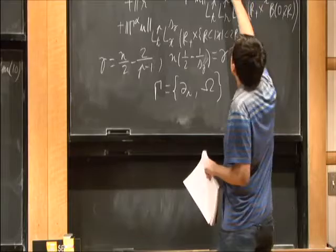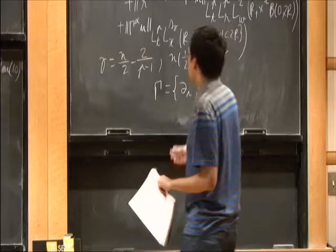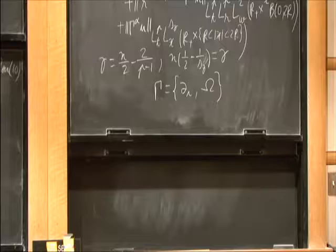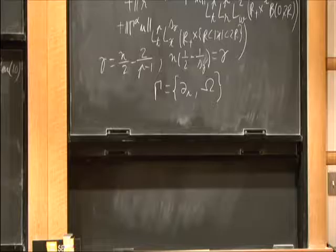Once you have these norms, you just have to work to show that they're preserved. You start with a linear equation, and the nonlinearity raises you up to power p. You need to take the correct norm so that you can control this by the X norm to some power. If the power is large enough, you can absorb it and prove everything stays bounded.